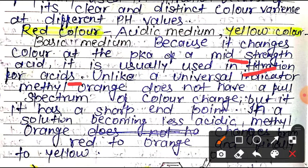Unlike universal indicators, Methyl Orange does not have a full spectrum of color change, but it has a sharp end point.